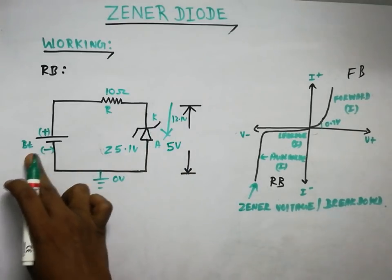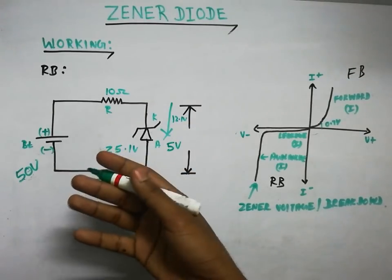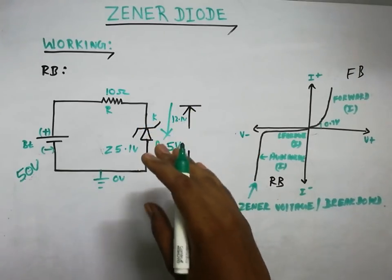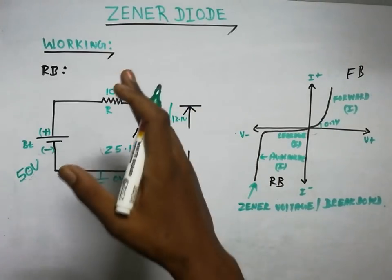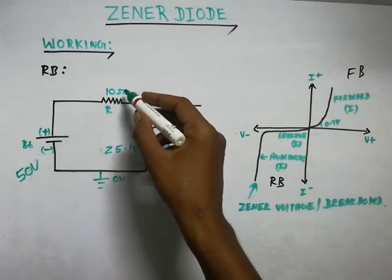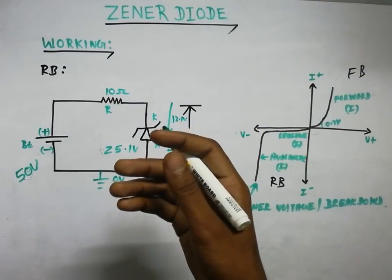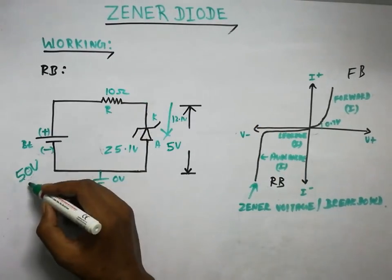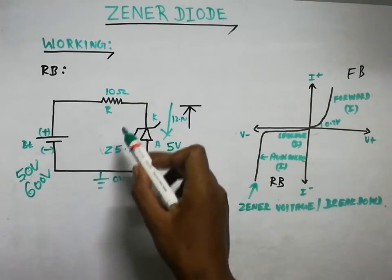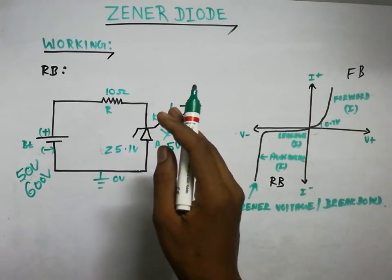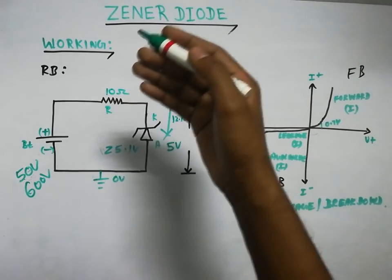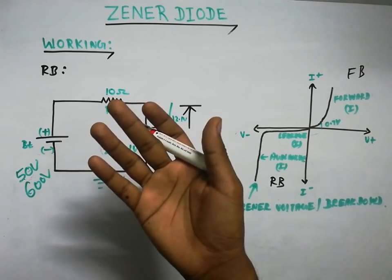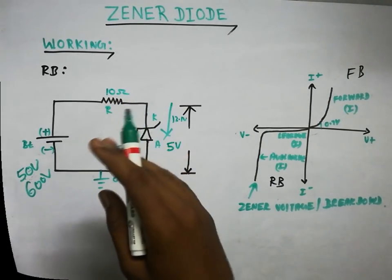For example, with a 50-volt input and a 5-volt Zener diode, the Zener maintains 5 volts across the output. The remaining 45 volts dissipate across the series resistor. However, if the input goes very high, say 600 volts, the resistor and Zener diode will be beyond maximum capacity and the diode may burn out.